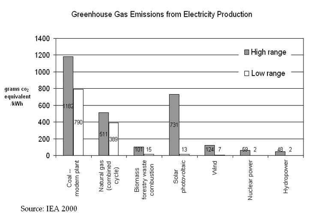One of the issues often discussed in relation to climate change mitigation is the stabilization of greenhouse gas concentrations in the atmosphere. The UNFCCC has the ultimate objective of preventing dangerous anthropogenic interference with the climate system, as stated in Article 2 of the Convention. This requires that greenhouse gas concentrations are stabilized at a level where ecosystems can adapt naturally to climate change, food production is not threatened, and economic development can proceed in a sustainable fashion.